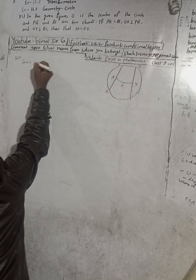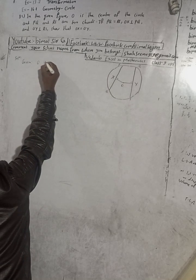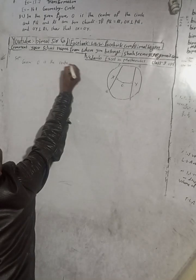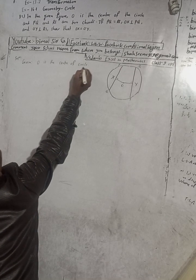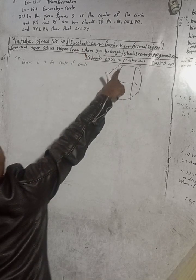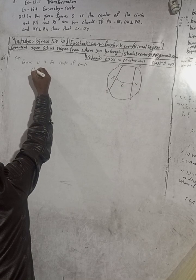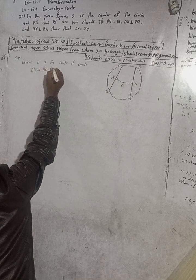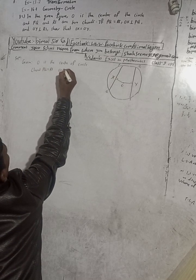Given: what are we given here? O is the center of the circle. Chord PQ is equal to RS — PQ is equal to RS.